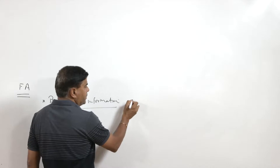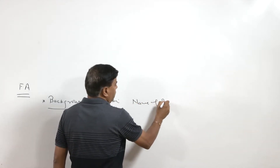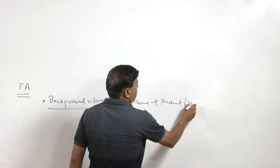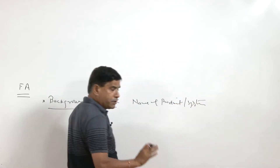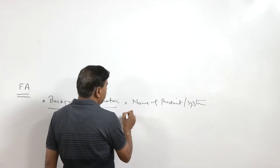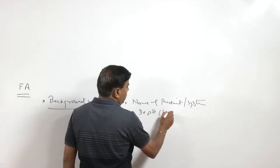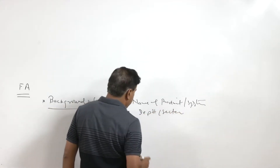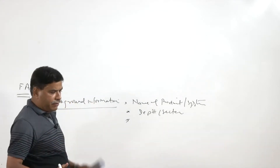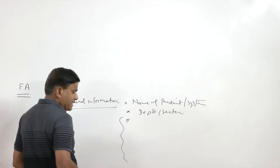We will start with the name of the product or the system which has failed and for which the failure analysis is to be carried out. Apart from the name, other information like the department or section where it was located is needed, along with technical information regarding familiarization with the failed component.